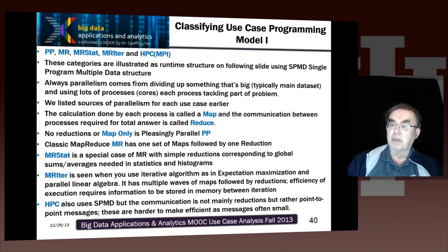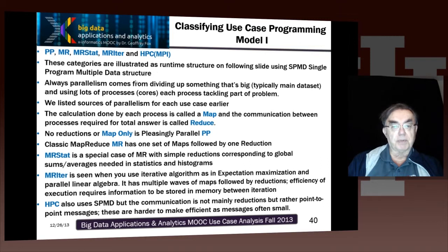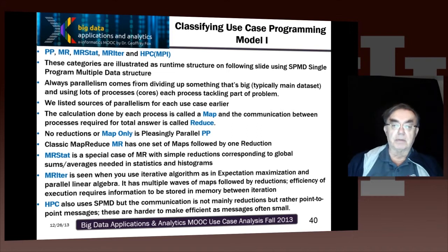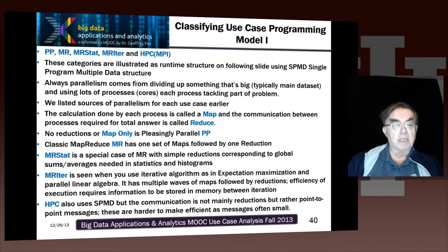In each case, they share the same overall single-program model with data: divide the problem up and use lots of processes, each running the same software and tackling part of the problem. This is done over a particular data set with a particular form of parallelism. The calculation done is a Map, and the communication is the Reduce. In the case where there's effectively no reduction, it's Map-only.